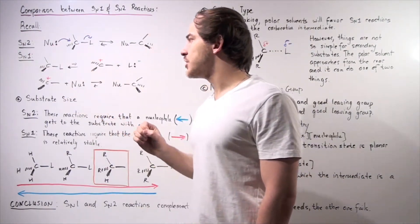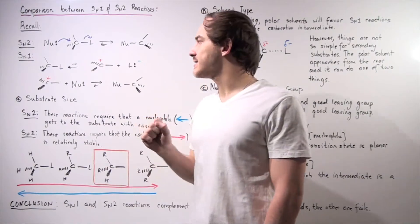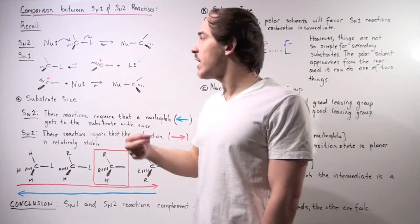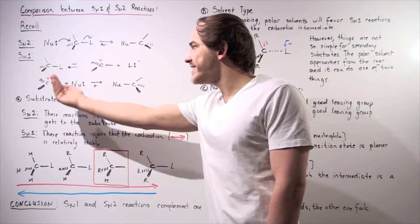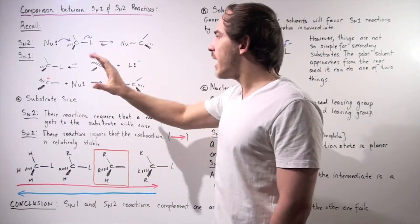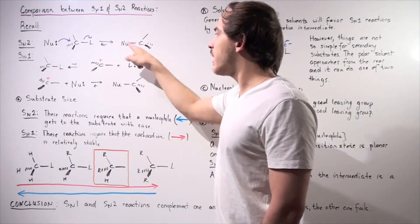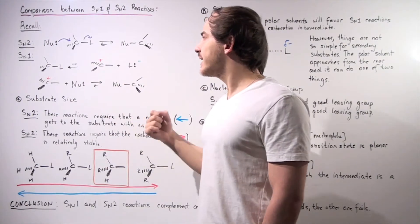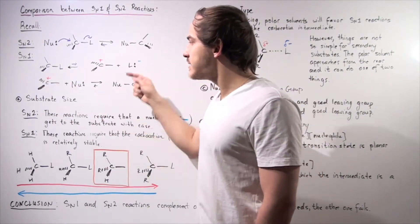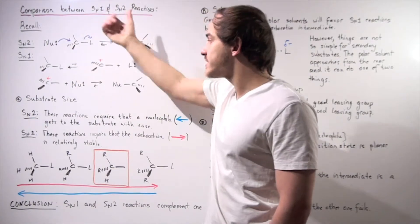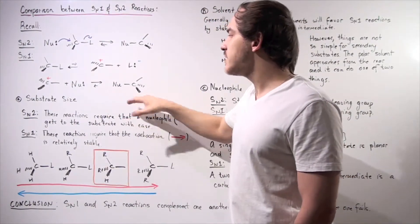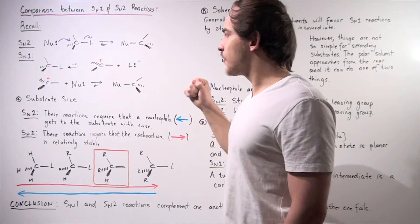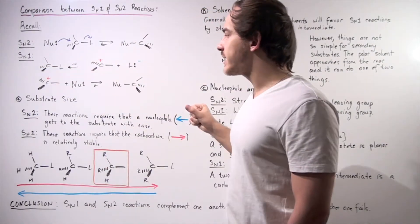In the SN1 reaction, it's a two-step mechanism. The first step is the ionization step — our leaving group detaches from the carbon by itself, stabilized by the solvent. Then the carbocation intermediate bonds with the nucleophile or solvent to form the final product. So: a one-step mechanism versus a two-step mechanism.